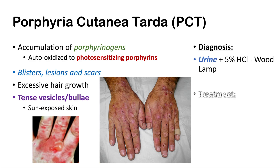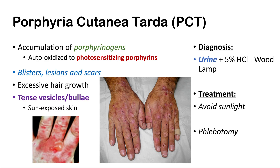Once the diagnosis is made, treatment involves avoiding sunlight, since the blistering, lesions, and excess hair growth occur in sun-exposed skin. However, in cases where iron is the cause of PCT — such as in hemochromatosis — phlebotomy, or bloodletting, may be used to treat porphyria cutanea tarda, specifically in cases where high iron load is causing the condition.